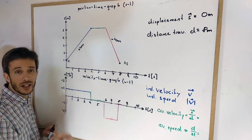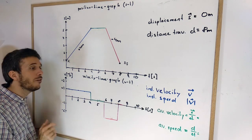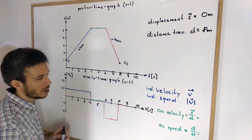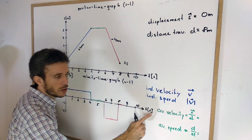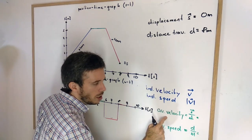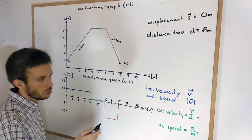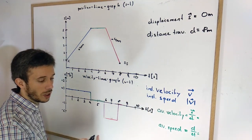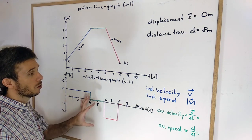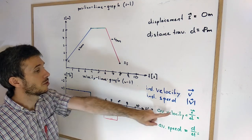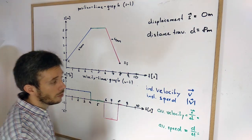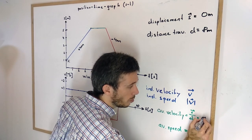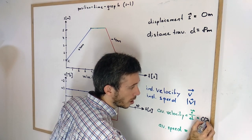Where it gets interesting is for average velocity and average speed. For average velocity, the rule is we take the displacement and divide it by time. So according to this formula, in this case our average velocity was 0 meters per second.